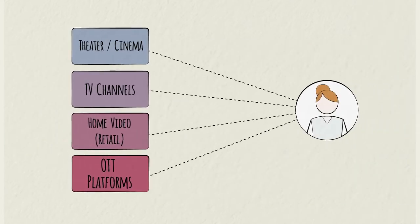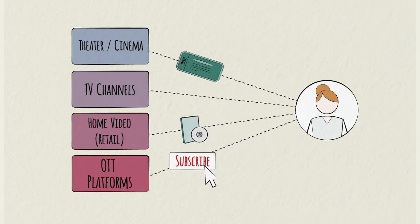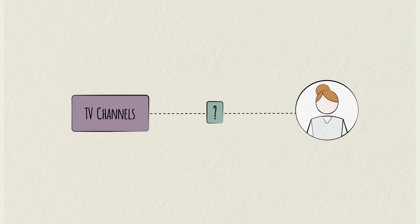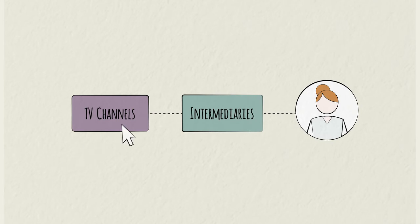As a consumer, you interact directly with theaters, retail, and OTT services. You buy a ticket from the theater, or purchase a subscription from an OTT service. With TV, the story is a bit more complicated, as sometimes intermediaries are involved. Let's see how it works.